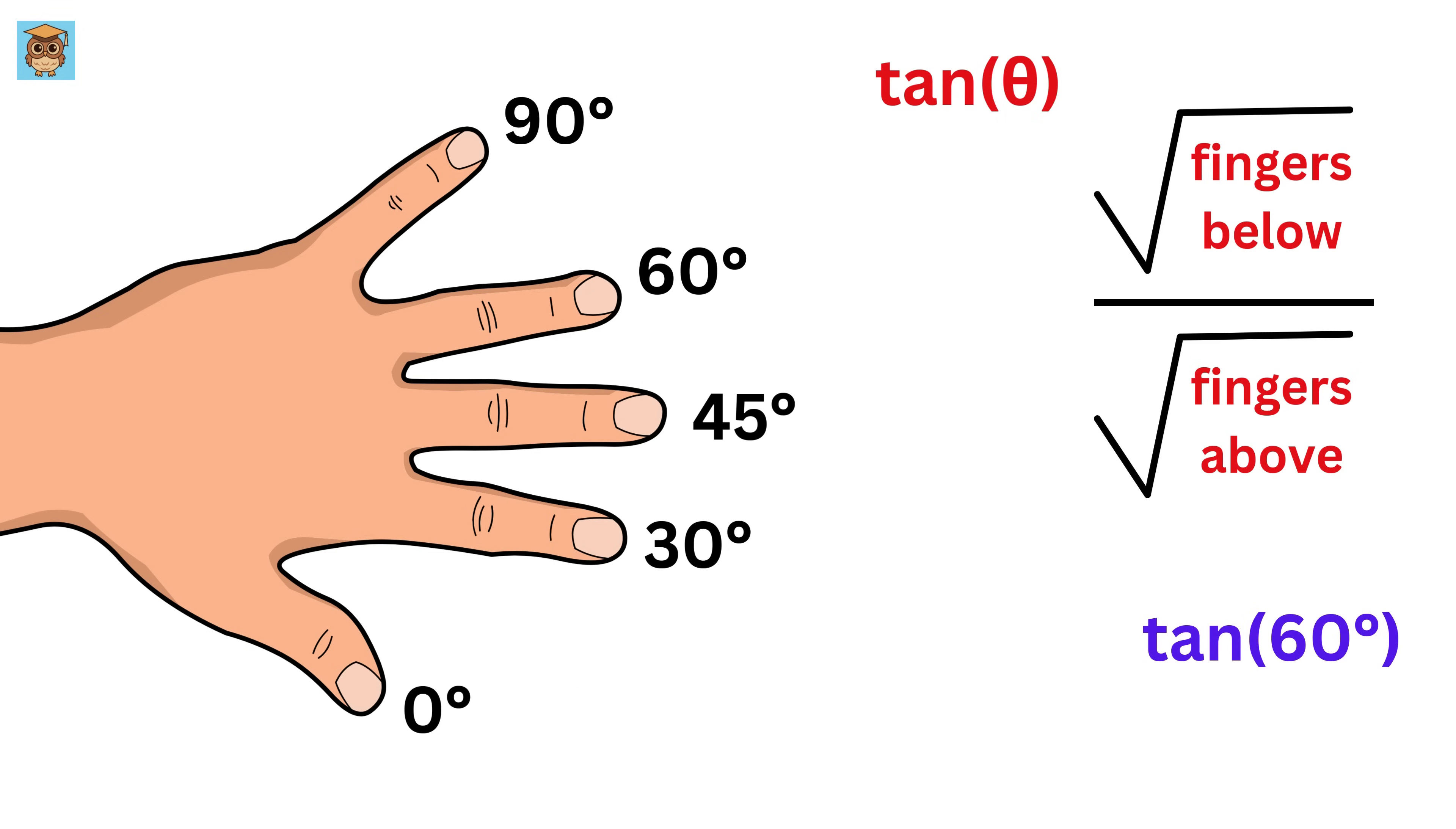Finally, let us look at tan 60 degrees. This is 60 degrees. Fingers below are this, this, and this, so 3, and thus write square root of 3 here. Then, fingers above is only this, which is 1, and thus write square root of 1 here. Square root of 1 is 1, and thus the answer for tan 60 degrees is square root of 3.